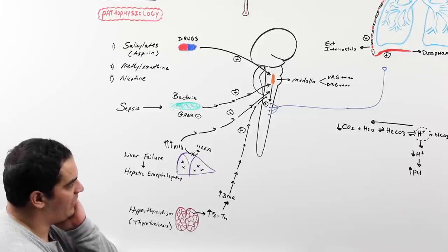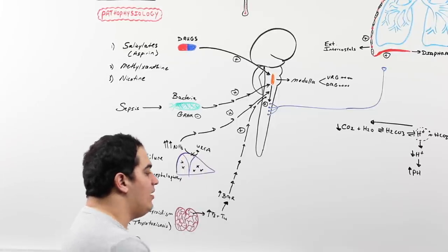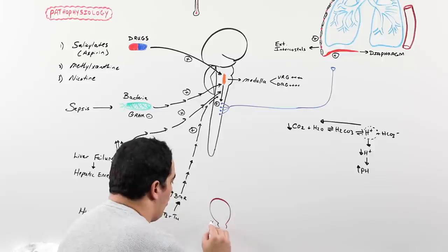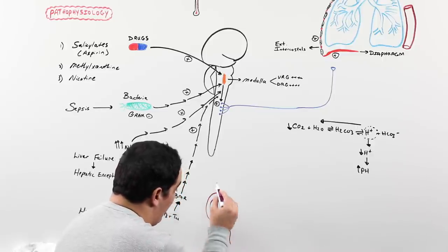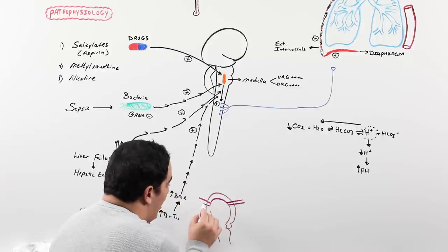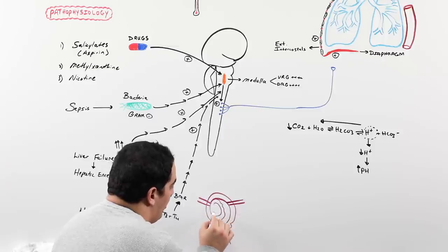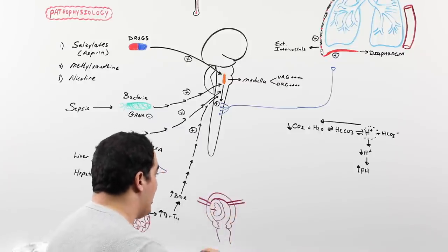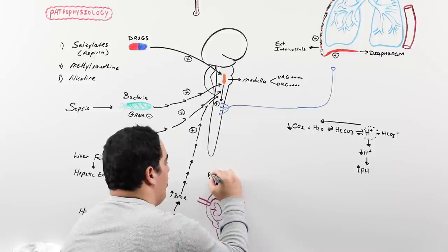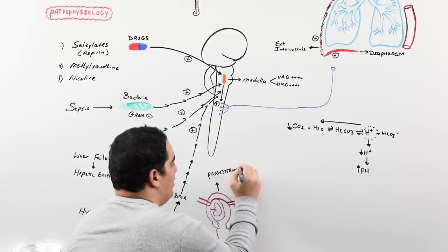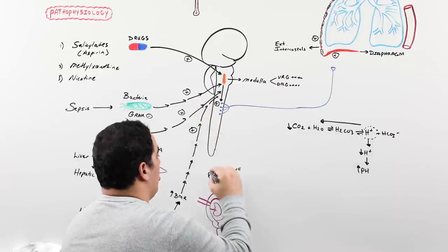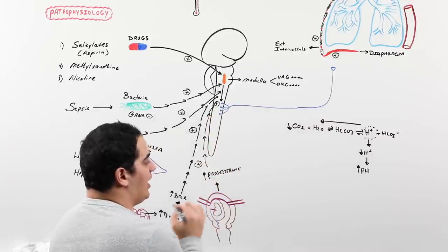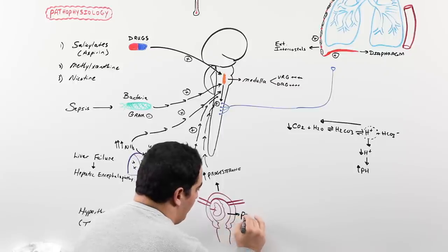There's one more thing not to forget: pregnancy. Sometimes in females who are pregnant, their body is dealing with many different hormones. One hormone with a profound effect on the medullary respiratory centers is progesterone. Sometimes in pregnancy, very large amounts of progesterone can be a very strong stimulus for those respiratory centers, causing increased firing of nerves and blowing off more CO2. Think of high levels of progesterone most commonly secondary to pregnancy.